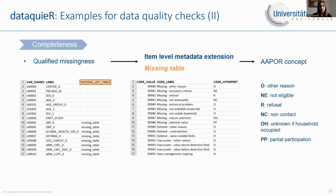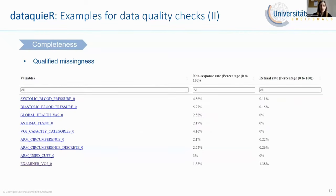Another important issue for observational studies are missing values. Ideally, the reason for a missing value should be recorded during data capture so that you know if a value is missing because of a technical problem, because a question or examination was not applicable, or because it was declined by a participant. With DataQuer, it is possible to list these missing values with their labels, or you can link to a missing table which matches missing value codes with codes from the American Association for Public Opinion Research. By this, you can calculate rates such as the refusal rate or the non-response rate. For our example data, we will get an output like this, and you should look out for large deviations, because these might point to an issue with a specific examination or question.